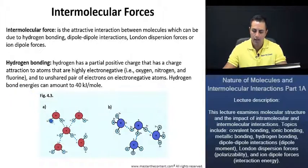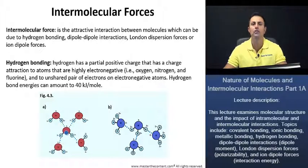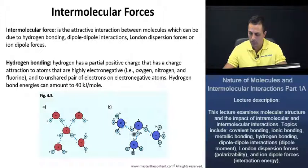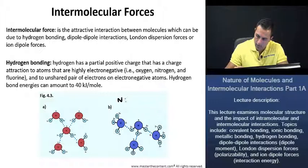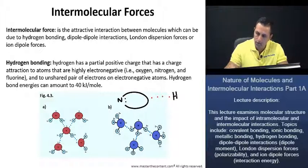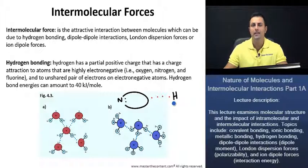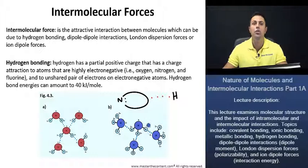Looking here now at Figure 4.3a, we see that water molecules exhibit hydrogen bonding. Just as stated previously, hydrogen is going to have a partial positive charge, and the oxygen is going to have a partial negative charge. Now, if we look at Figure 4.3b, we see with our ammonia here, hydrogen bonding takes place between the partial positive charge of the hydrogen atom and the unshared pair of electrons on ammonia. This hydrogen atom, because it is so small and has no electrons shielding its nucleus, forms a quite strong bond with neighboring atoms that have an available pair of electrons.